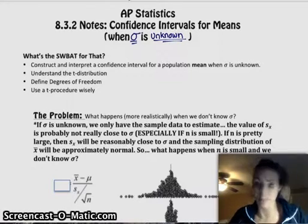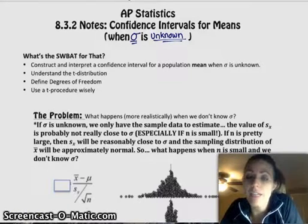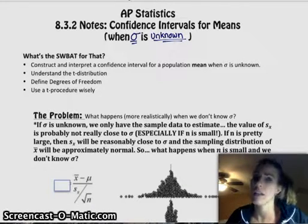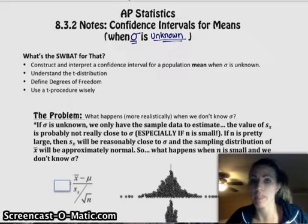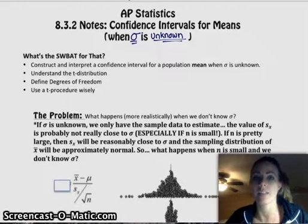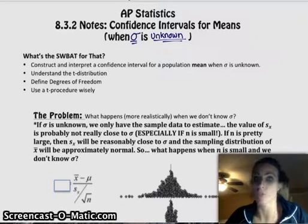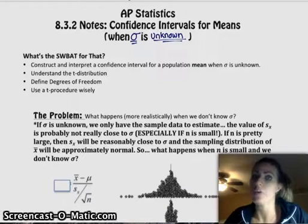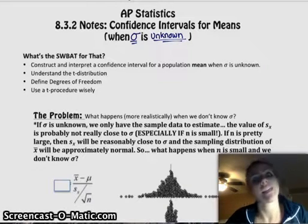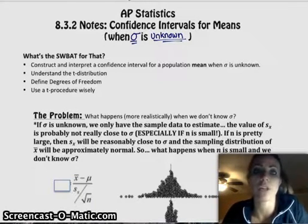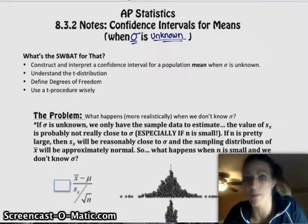So here's the dilemma. When sigma is unknown, the only thing you have to estimate the standard deviation is s of x, but the problem is the sample standard deviation is generally really far away from the true standard deviation of the population. And that kind of depends on what n is. If n is really small, s is generally really far away from sigma, and as n gets larger, as the sample size gets larger, then your standard deviation will get closer and closer to the true standard deviation of the population.